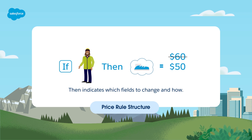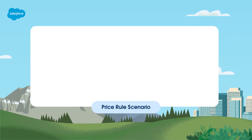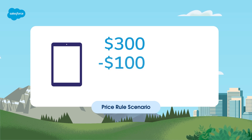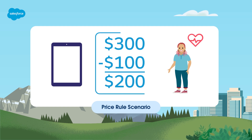Now that we've reviewed the basics, it's time to build your own price rule. Consider the following scenario: BC Computing sells tablets at $300 each. However, they want to offer a reduced price to healthcare workers for $200. Let's help them create a price rule that will automatically change the tablet price anytime a rep quotes healthcare workers.